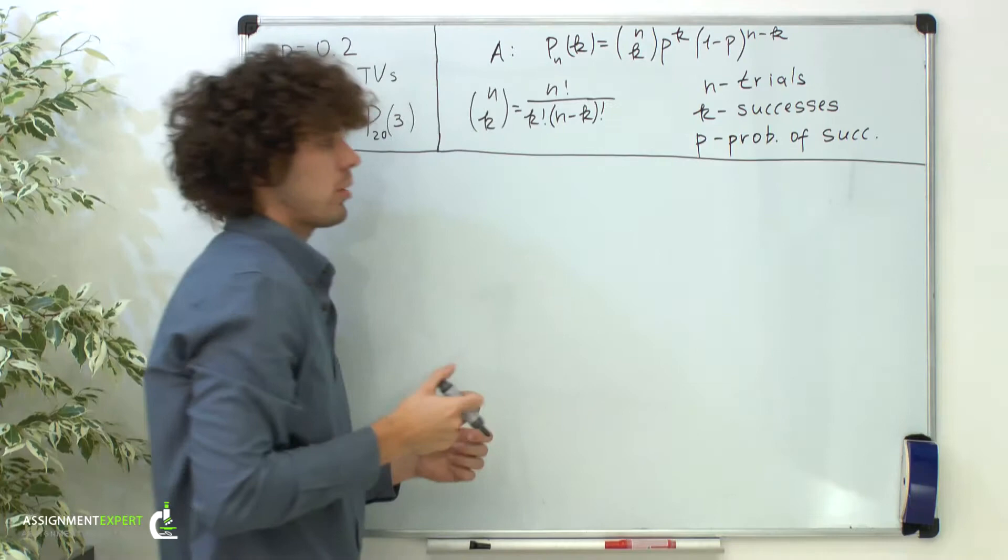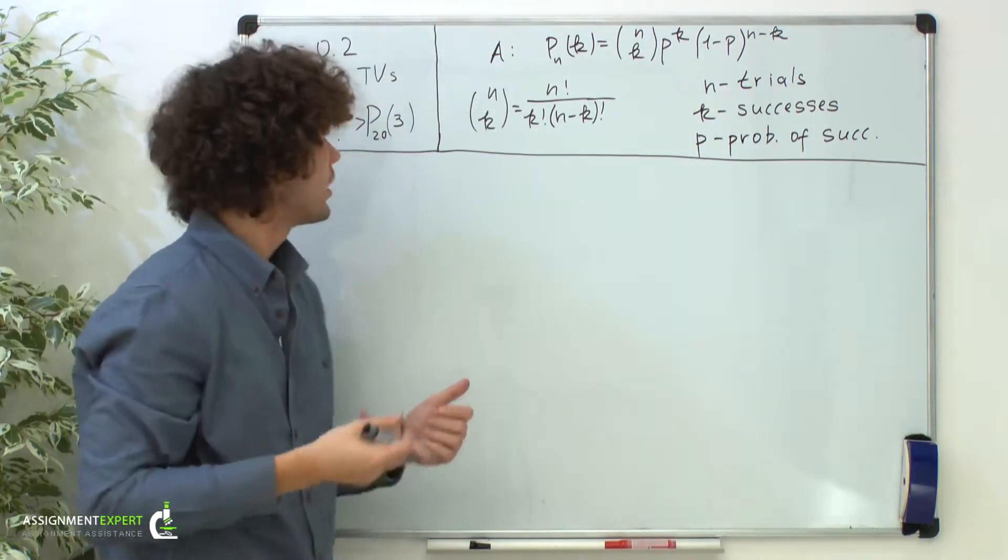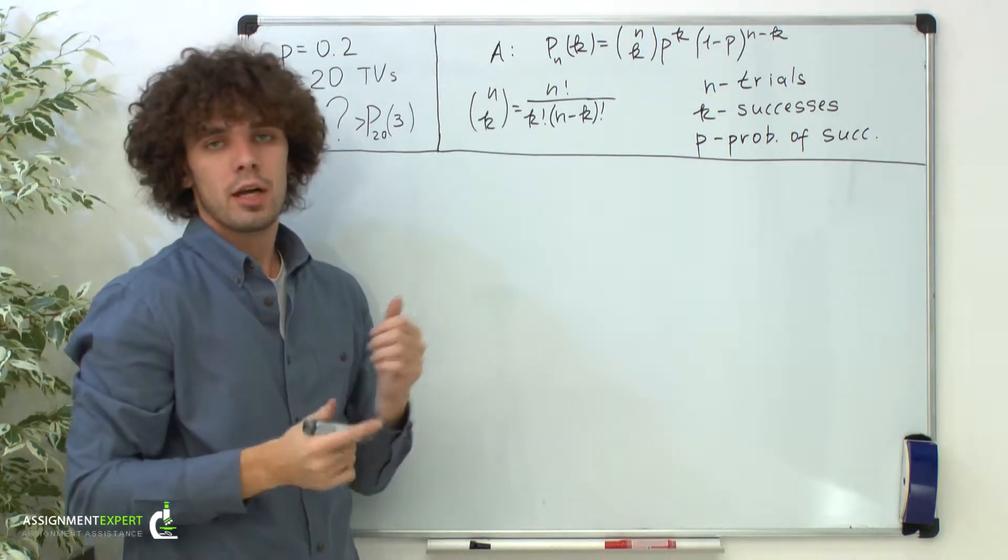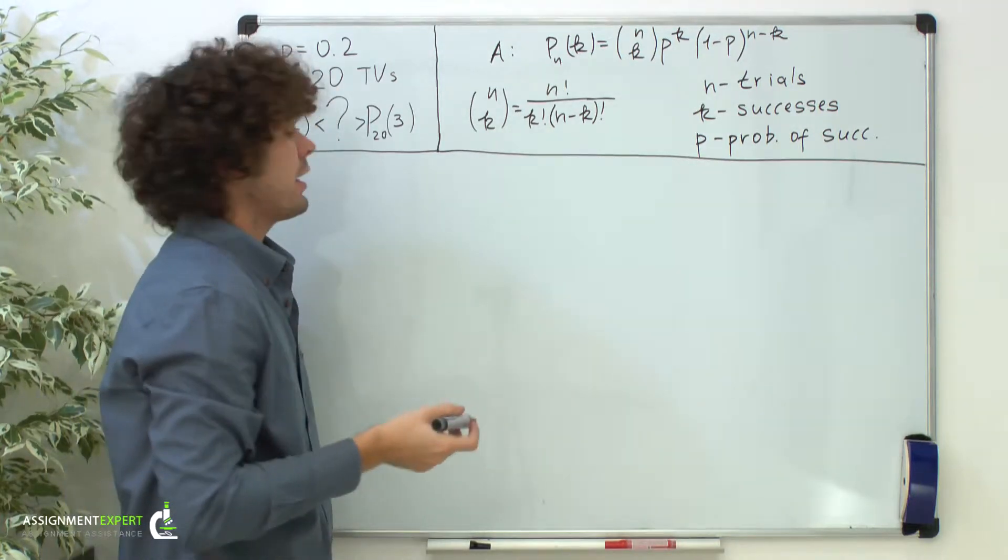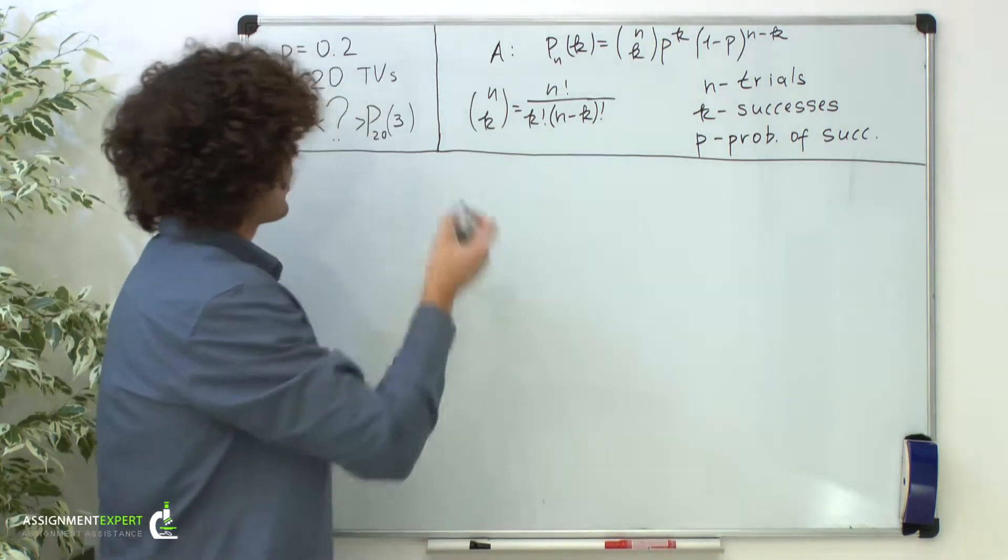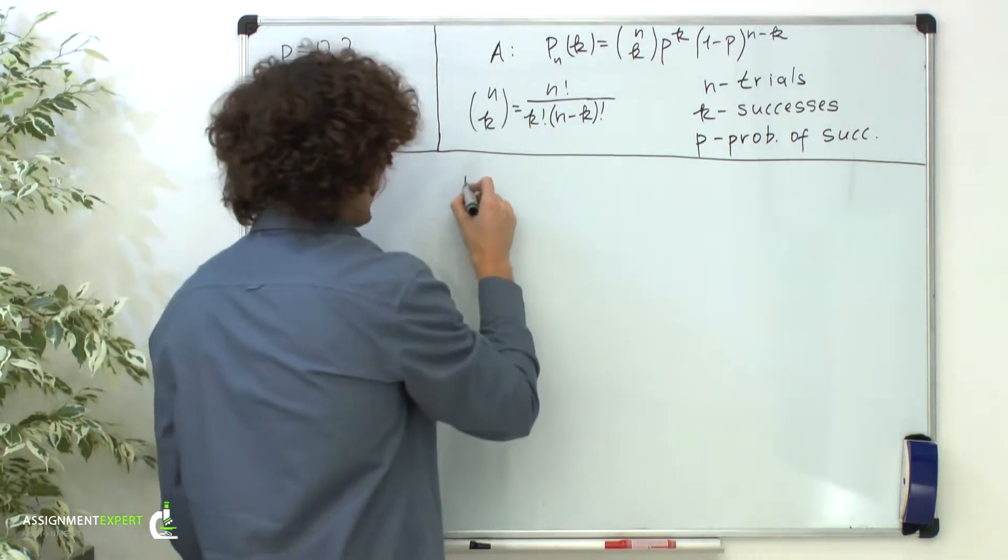So here's our formula. Now back to our example. The event of interest A in our case is getting a defective TV. The total number of trials n equals 20.